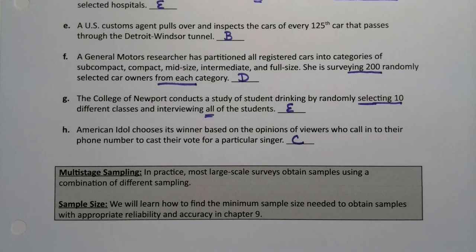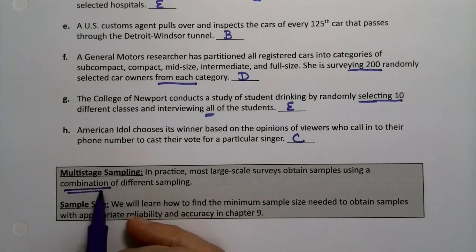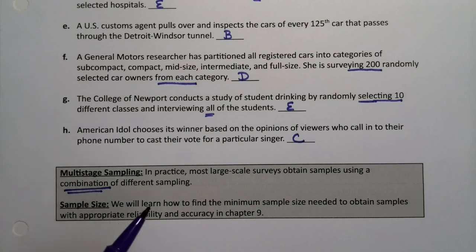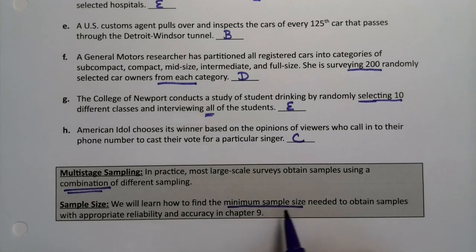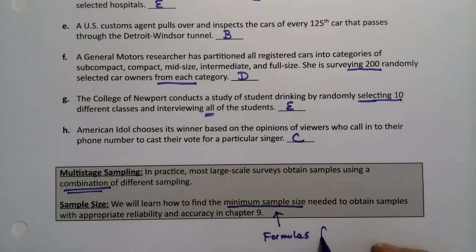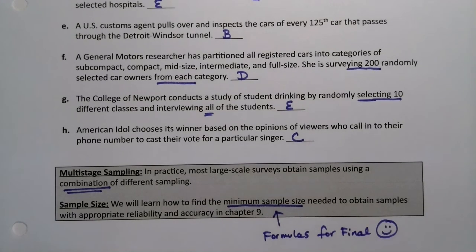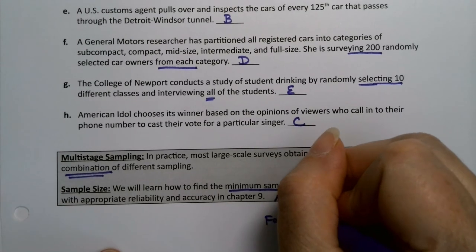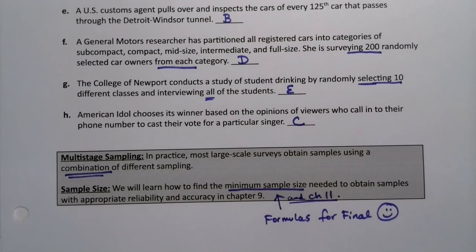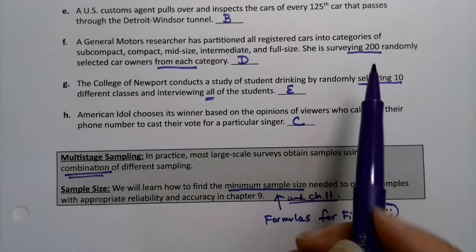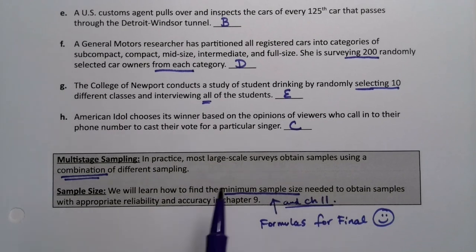One last comment: multi-stage sampling. In real life, people don't just do a single cluster sample — they do a cluster and a simple random and another cluster, stacking these on top of each other. Most large-scale surveys do combinations of these methods. We'll learn more about what minimum sample size is needed for accuracy and reliability in Chapters 9 and 11 — there are formulas for this. It has to do with the inference between a sample and a population and how accurate you want to be.